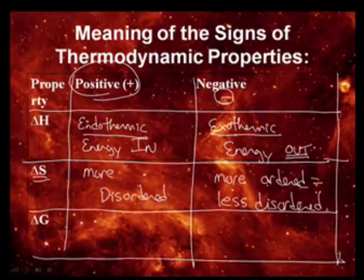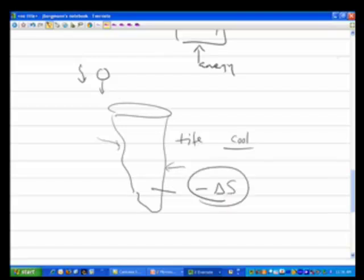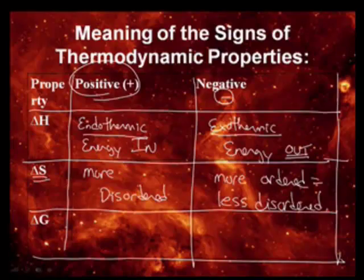The stalactite example I just gave came as a solution, one drop of liquid at a time. As it came down, it produced something more ordered, so this would have a negative delta S. Things can become less disordered if you have lower energy, if the delta H term overrides the delta S term.